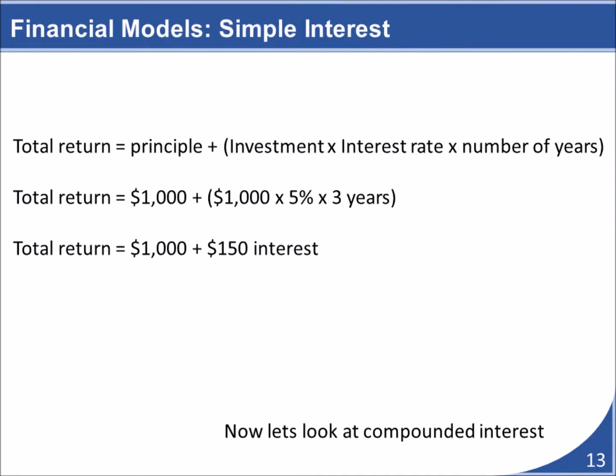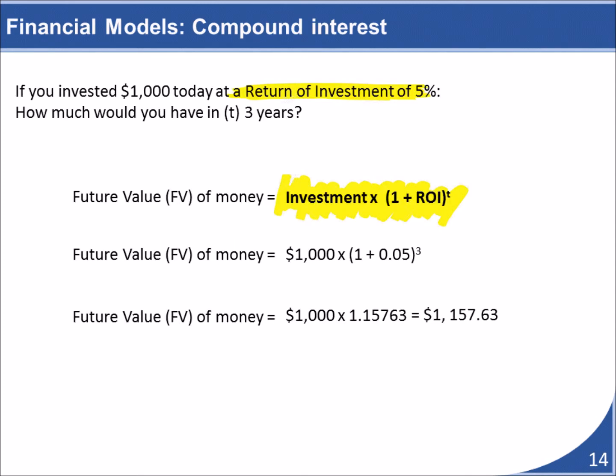Using simple interest, we withdraw the interest each year, and it is only our initial investment that continues to earn interest in future years. We take out the 5% interest earned each year — about $50 — for each of the three years. In the end, we get our initial $1,000 back plus $150 in interest. Compound interest uses a different formula: instead of withdrawing the interest each period, we leave it in place so it earns interest in future periods as well.